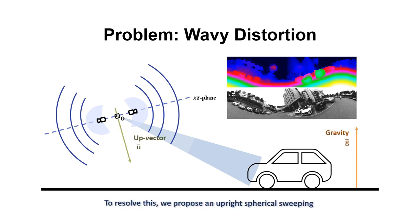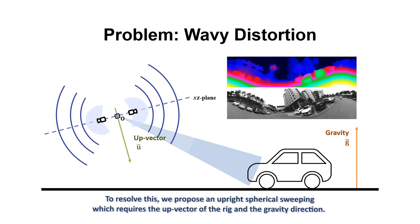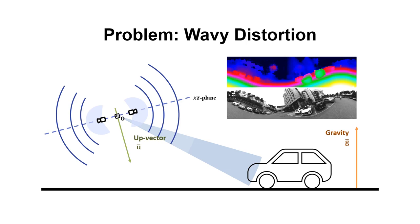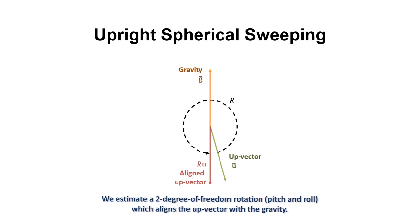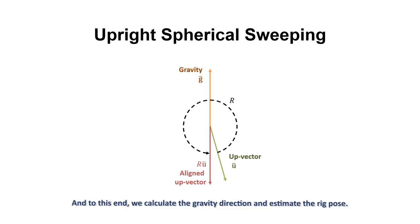To resolve this, we propose an upright spherical sweeping which requires the up-vector of the rig and the gravity direction. We estimate a 2 degree of freedom rotation which aligns the up-vector with the gravity. And to this end, we calculate the gravity direction and estimate the rig pose.